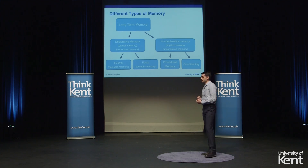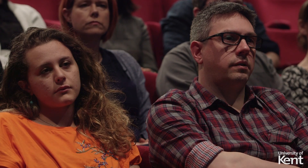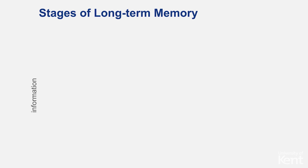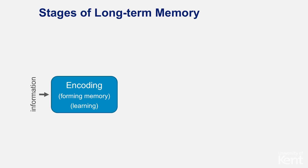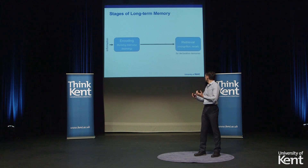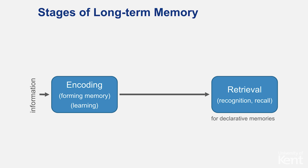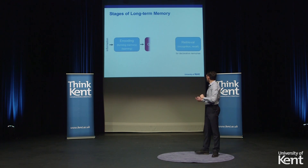Today I'm going to focus on declarative memory, which is a form of long-term memory. In order to memorize something we need to go through different stages. First, information comes in through different sensory inputs — visual through our eyes, auditory through our ears, or tactile information. This information needs to be encoded to form memory, which is also a form of learning. Following encoding, at a later stage comes retrieval, where you recall that piece of information.